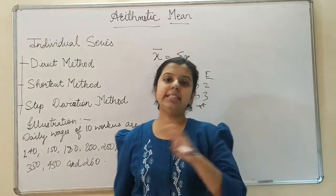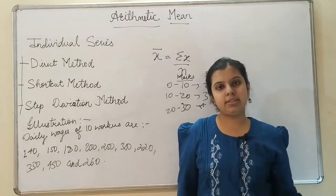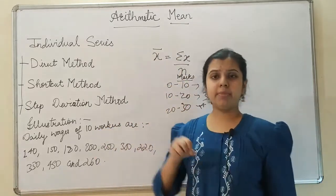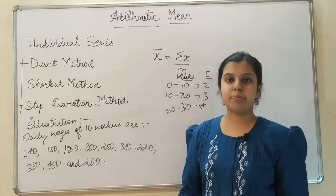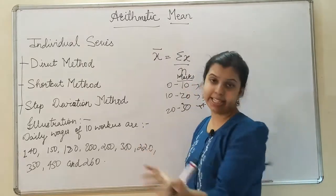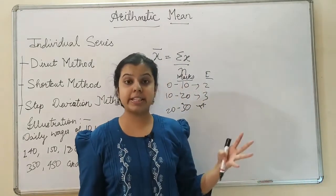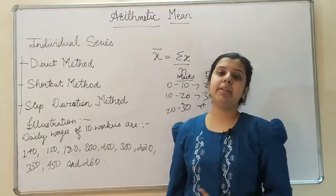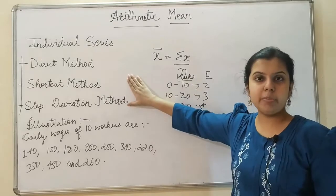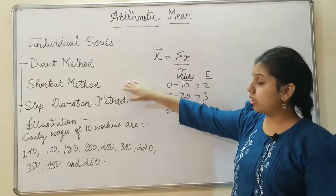The direct method is the simplest method, in which you can take the formula and apply it to calculate the arithmetic mean. The shortcut method is a handy process when your data is much more voluminous. If you have only 10 or 20 entries you can go with the direct method, but if you have 100 or 200 entries, then you use the shortcut method or the step deviation method, which help calculate the arithmetic mean with voluminous data.